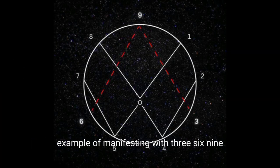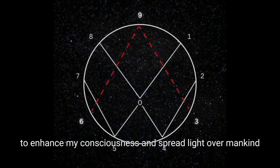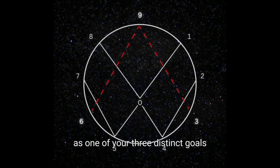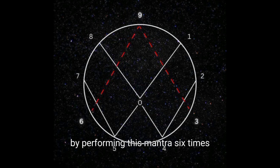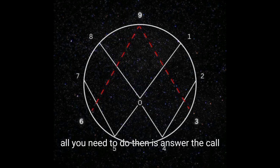Example of manifesting with 3, 6, 9. Take the affirmation: I want to increase my spiritual capacity to enhance my consciousness and spread light over mankind as one of your three distinct goals. By performing this mantra six times, you begin to attract universal forces that will show you how to achieve your goal in a practical way. All you need to do then is answer the call.